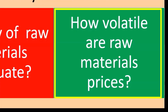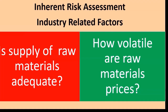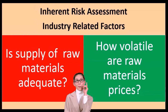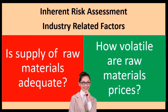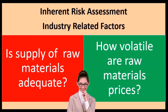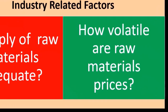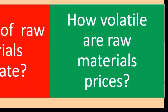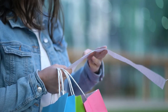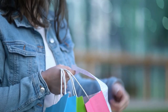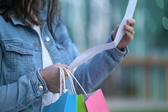Another inherent risk factor is how volatile raw material prices are. When thinking about our purchasing process and making inventory, we're concerned about profit margins. If material costs vary a lot, that makes the purchasing process more difficult and inherently risky. If raw material prices are fairly stable and I can be very certain about the estimated price throughout our primary purchasing items, that makes the process much easier to manage and test.